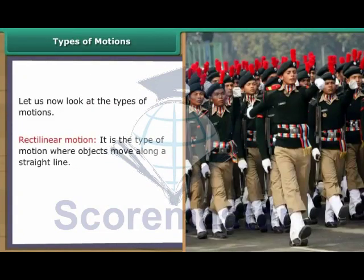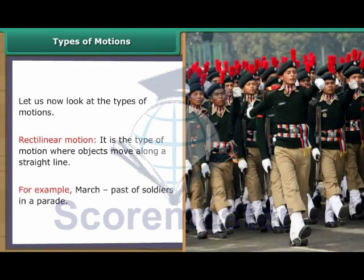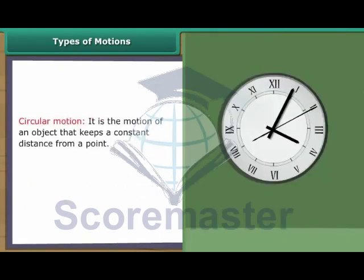Rectilinear Motion. It is the type of motion in which objects move along a straight line. For example, it is the motion of an object that keeps a constant distance from a point.